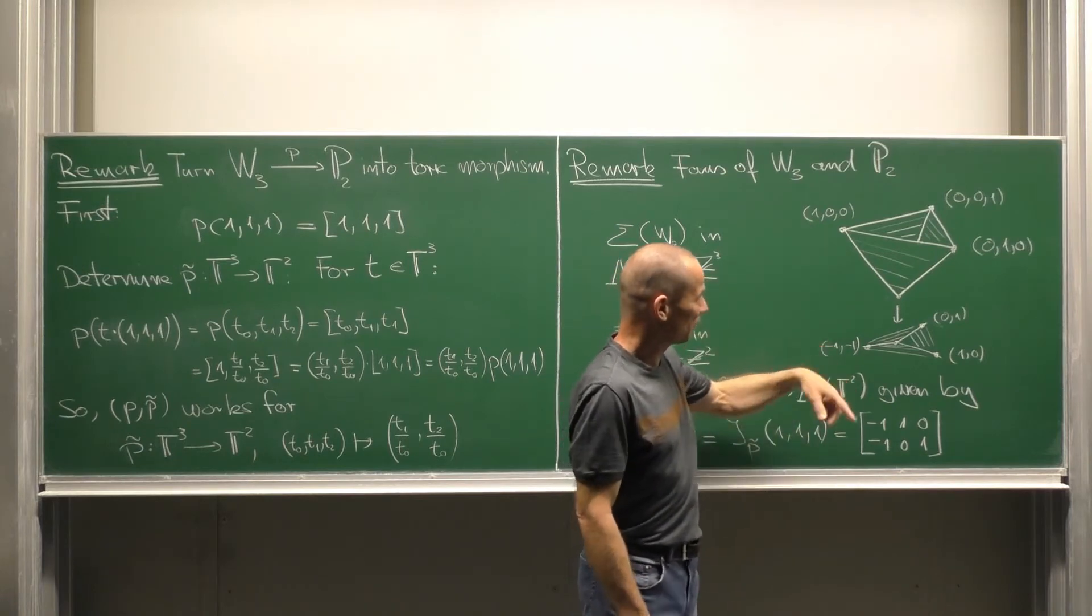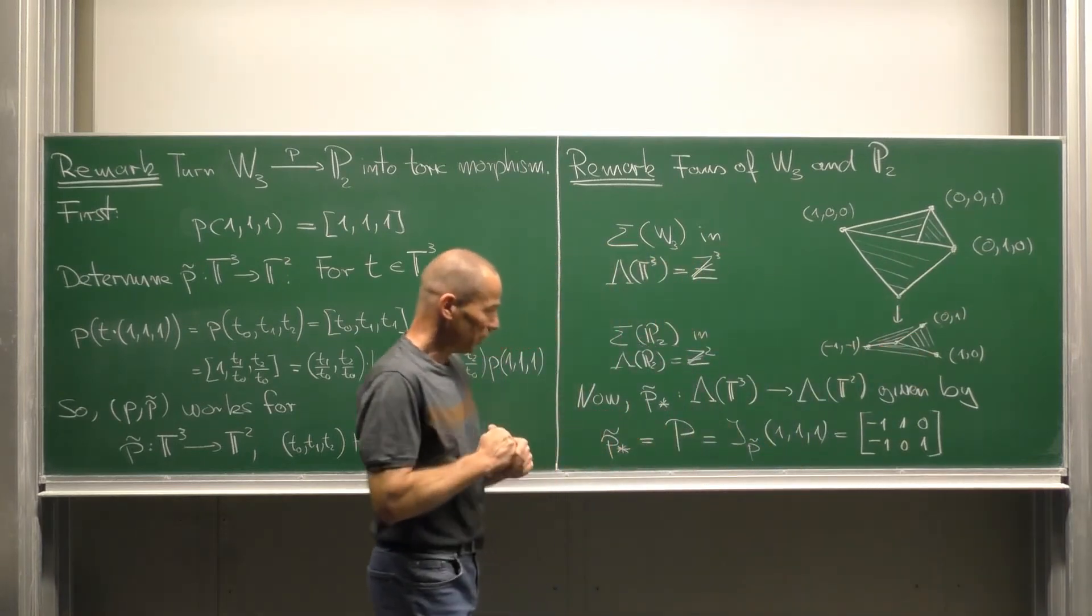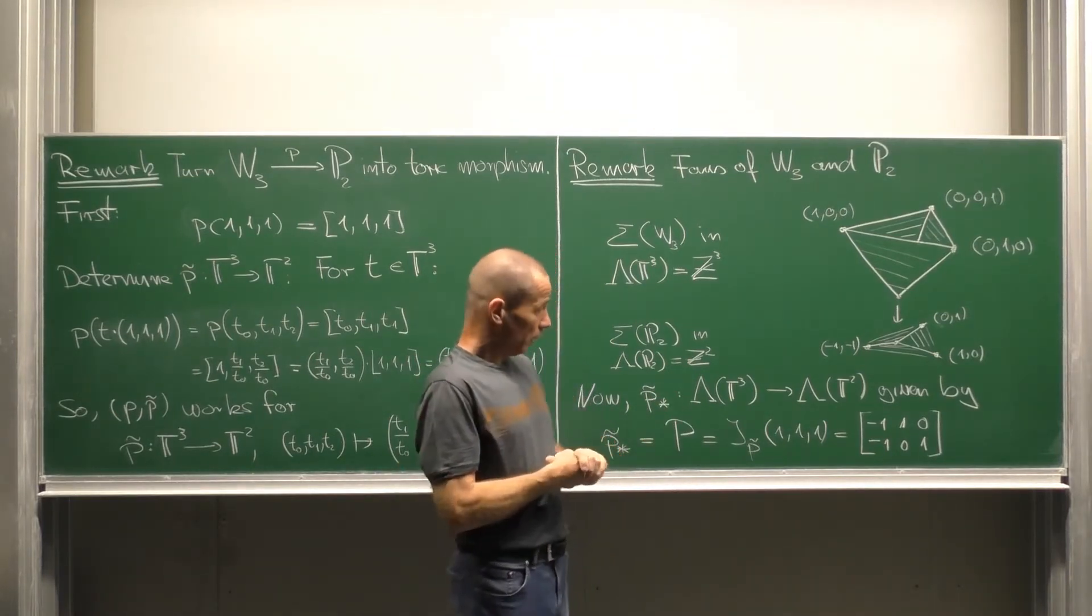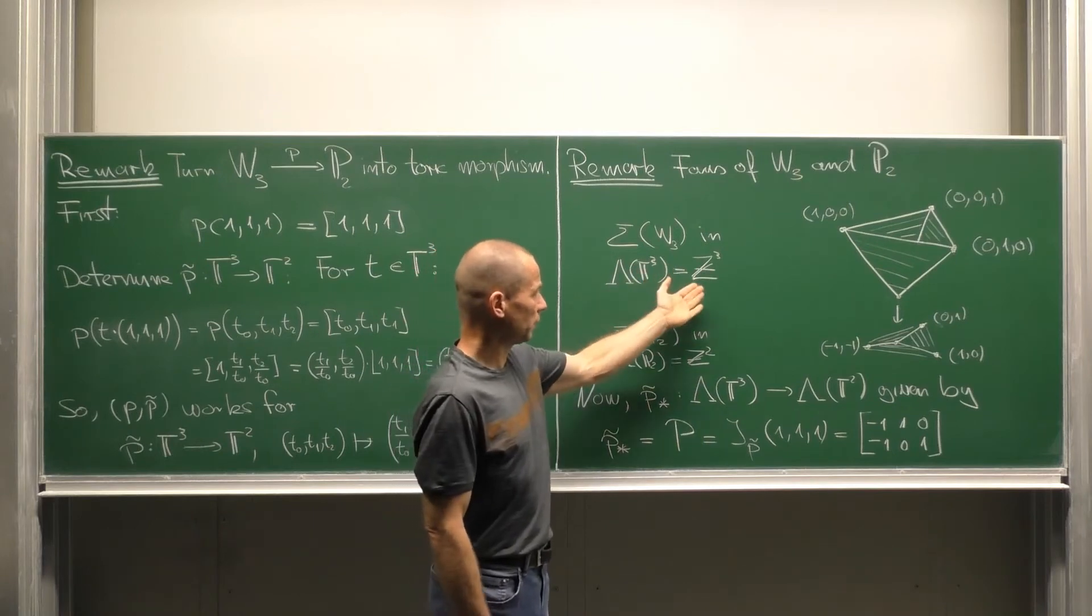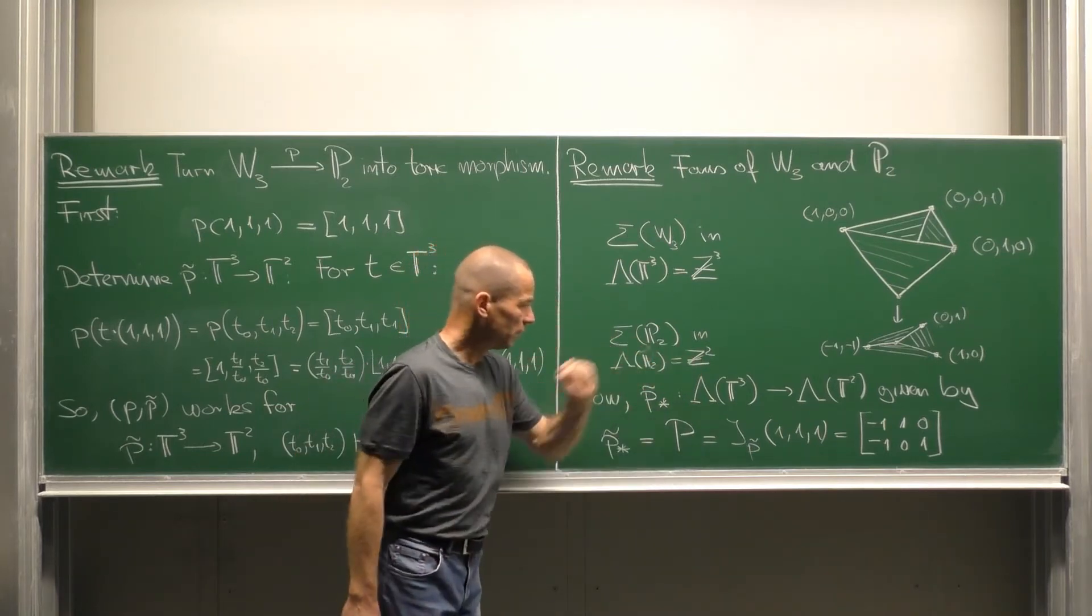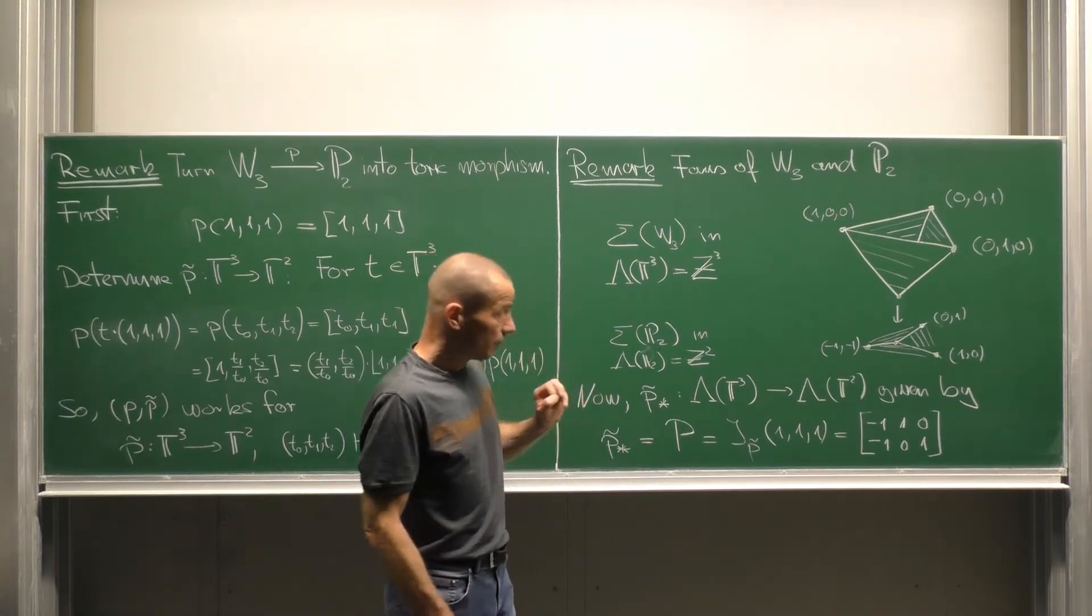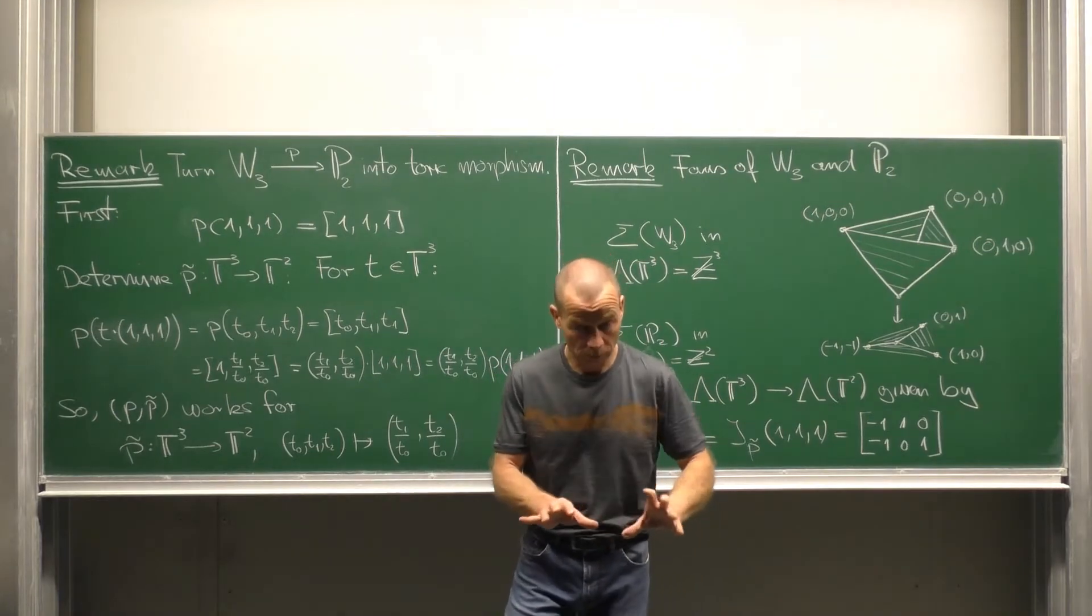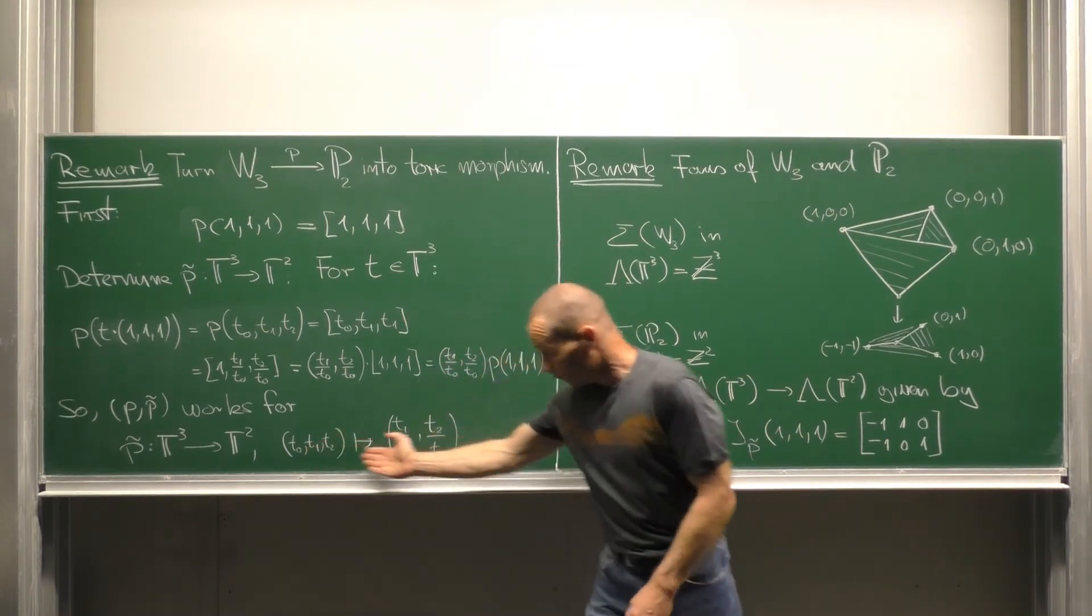It should send this vector to that one, this vector to that one and this vector to that one. However, by definition our map of fans is the push forward of one-parameter subgroups. Now we identify the one-parameter subgroups of the three torus with Z³ and the one-parameter subgroups of the two torus with Z². In this setting our push forward homomorphism is just the Jacobian of pi tilde evaluated in the point (1,1,1). That means we have to compute the derivative of this map here.